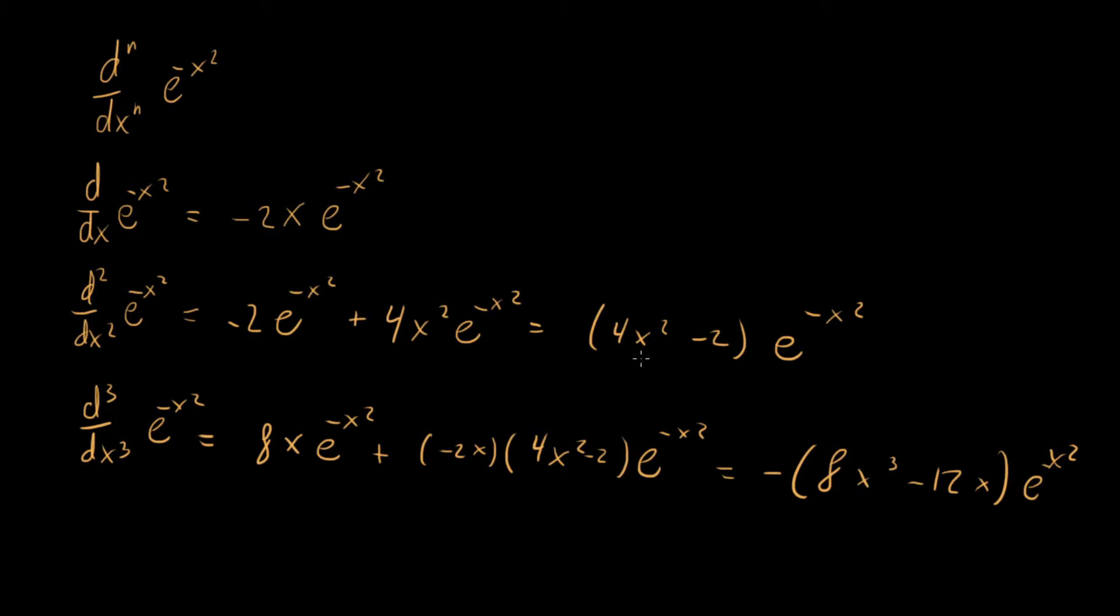And there's something interesting about the terms. We see that the highest order term is always equal to this highest order derivative we have. So here we have an x squared, and we're taking the second derivative. Here we have an x cubed, and we're taking a third derivative. And we also see that all the terms in the polynomial are either odd or even. And that's something that maybe we can sort of see from the get-go, just from this derivative, because we know that e to the minus x squared is even, so a derivative has to be odd, a second derivative has to be even, third derivative has to be odd. So we have all of these properties showing up here.